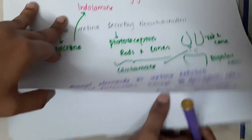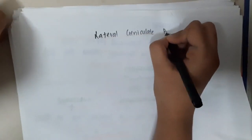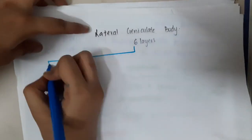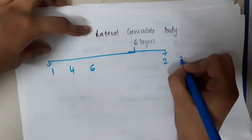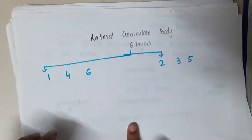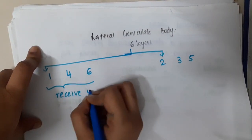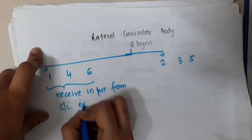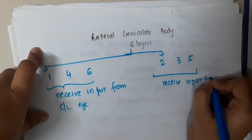Now let us learn the structure of the lateral geniculate body. It has six layers. These are grouped as layers 1, 4, 6 and layers 2, 3, 5. Layers 1, 4, and 6 receive input from the contralateral eye, whereas layers 2, 3, and 5 receive input from the ipsilateral eye.